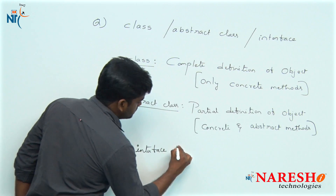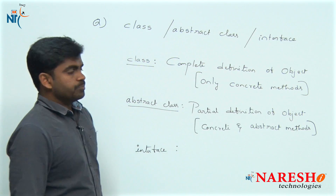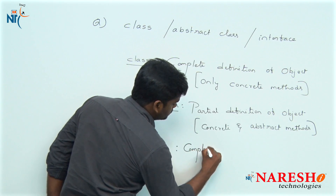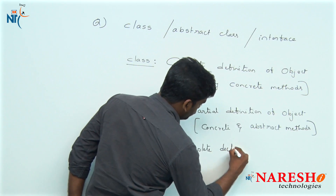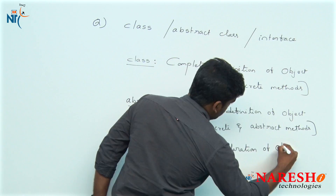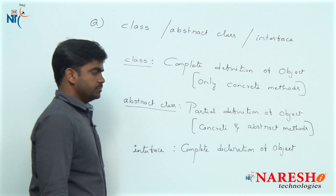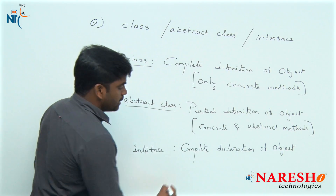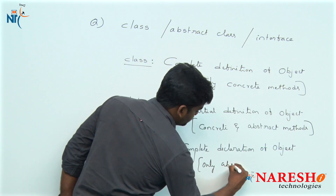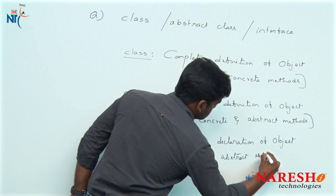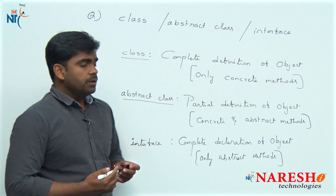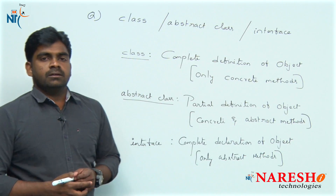What is an interface? An interface is the complete declaration of an object — no definition at all. Only abstract methods are allowed in an interface. Only abstract methods are allowed.